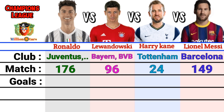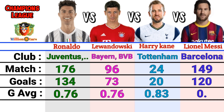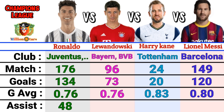Champions League goals: Ronaldo 134, Lewandowski 73, Harry Kane 20, Messi 120. Goals average: Ronaldo 0.76, Lewandowski 0.76, Harry Kane 0.83, Lionel Messi 0.80. Assists: Ronaldo 48, Lewandowski 22, Harry Kane assisted, Messi assisted.